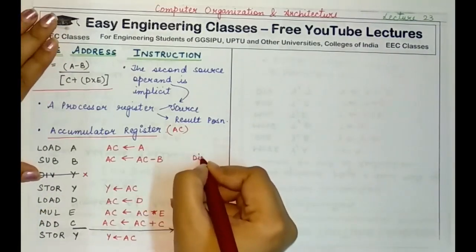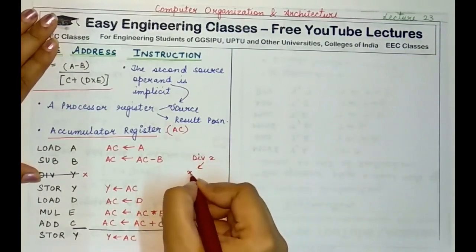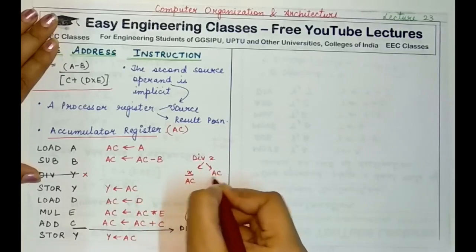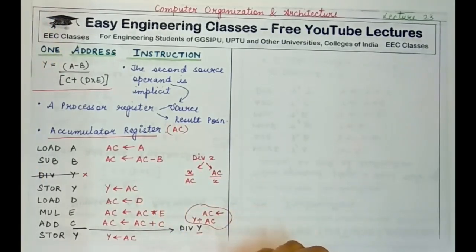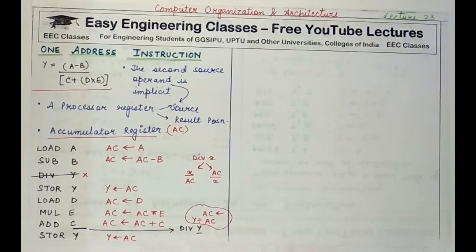So there are two possible meanings of 'divide X': either X divided by the accumulator register, or the accumulator register divided by X. You need to be aware of this when implementing it practically in labs, because it can result in a wrong output if you use the wrong interpretation.